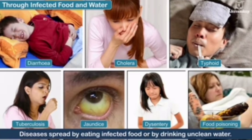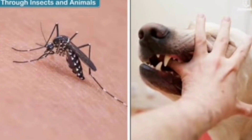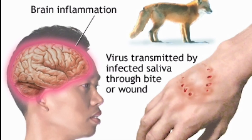Communicable diseases also spread through animal bites. Some animals carry germs of different diseases in their body, and their bite may transfer these germs to the victim and hence cause the disease. Diseases like rabies spread through a dog bite.